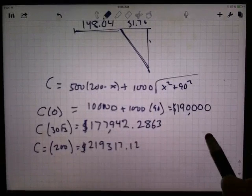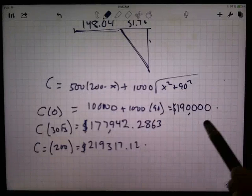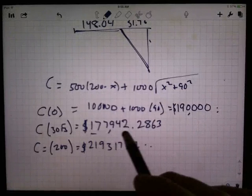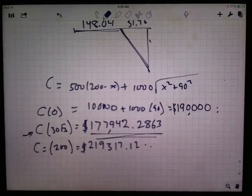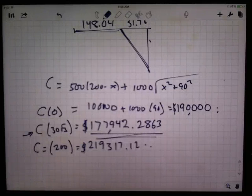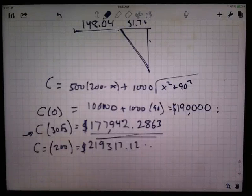So these indeed are bigger, and the smallest one here is at that critical value. So the minimum cost is 177,942 dollars, and a little over 28 cents to install that cable.